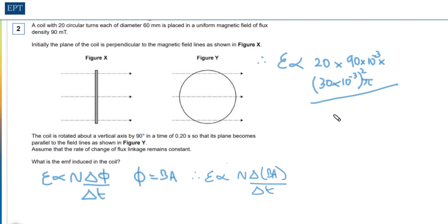And all of that lot is divided by the time it takes, which is 0.2. When you stick that into your calculator, you get the answer that the EMF is proportional to 25 millivolts, which is in fact the answer.